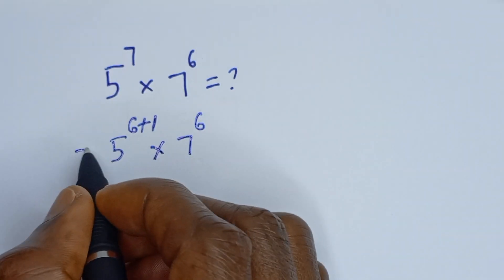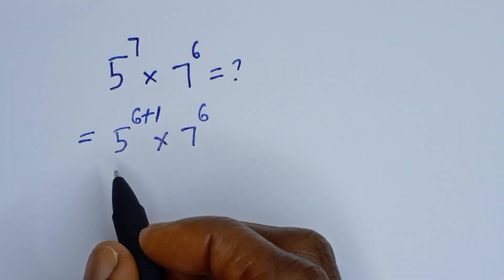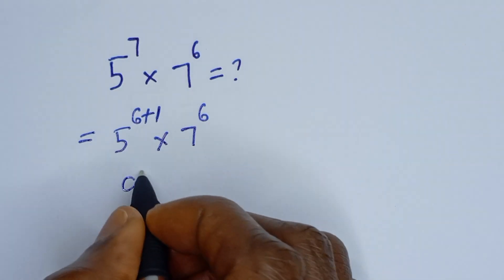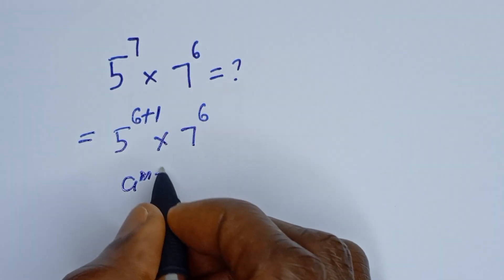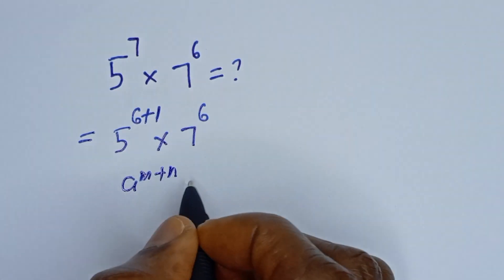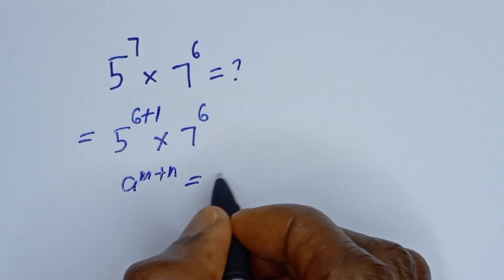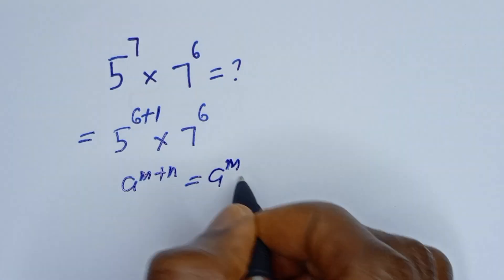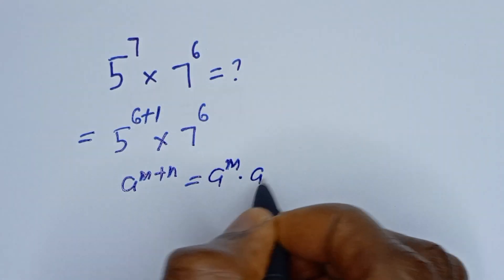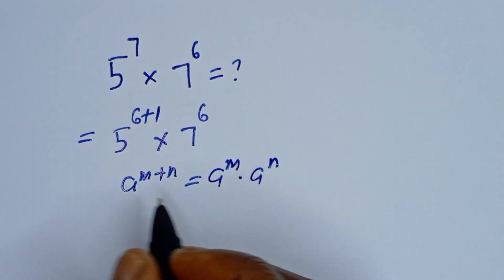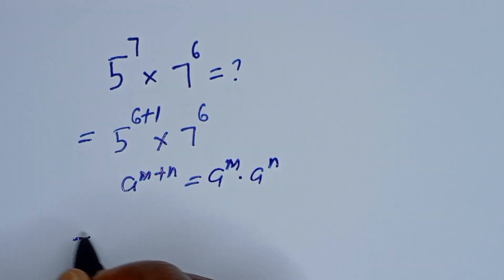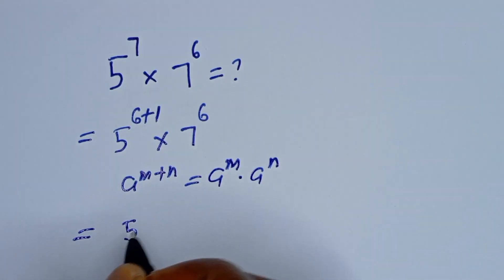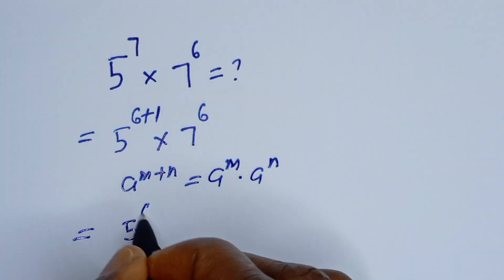Take note that if you have a to the power of m plus n, this is equal to a to the power of m multiplied by a to the power of n. Then this can be written as five to the power of six multiplied by five to the power of one, multiplied by seven to the power of six.